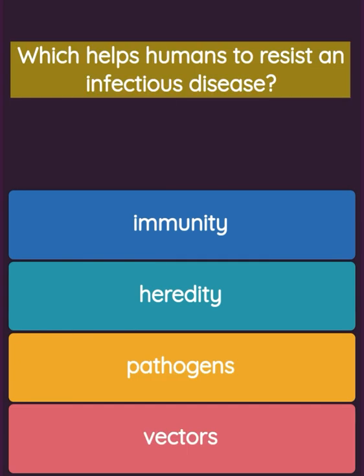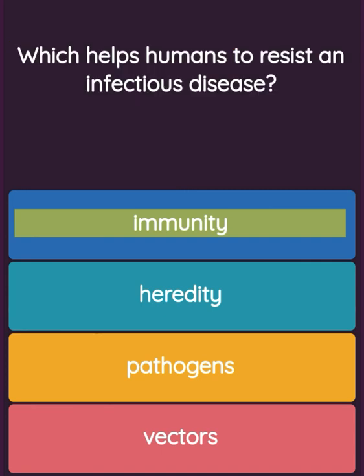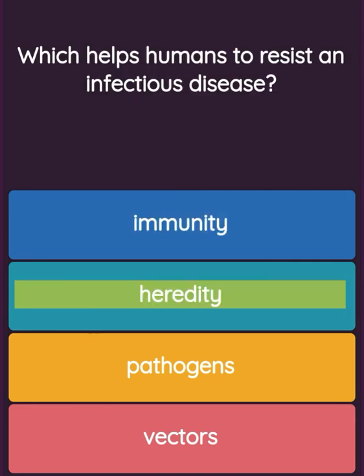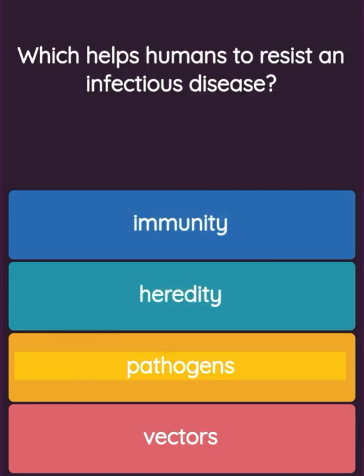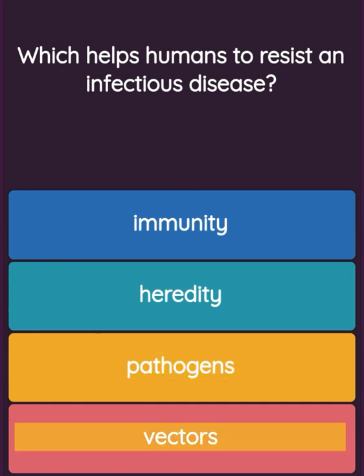Question: Which helps humans to resist an infectious disease? Option one: immunity. Option two: heredity. Option three: pathogens. Option four: vectors.